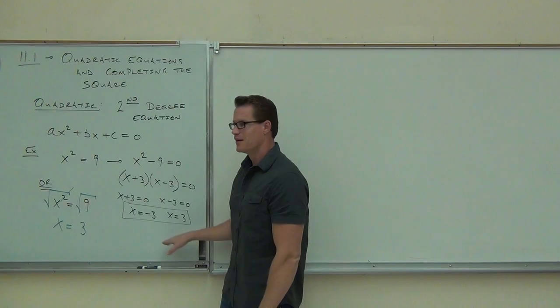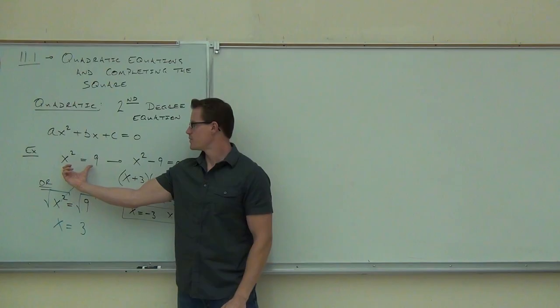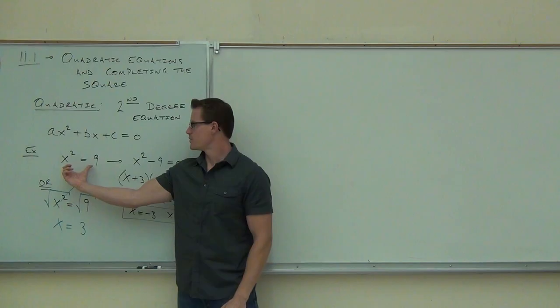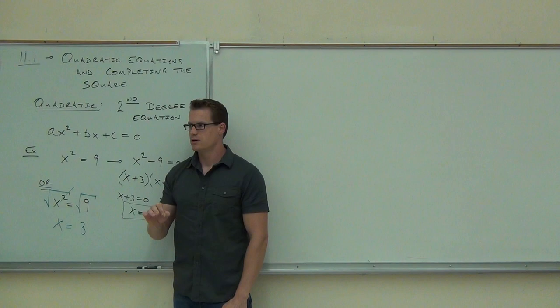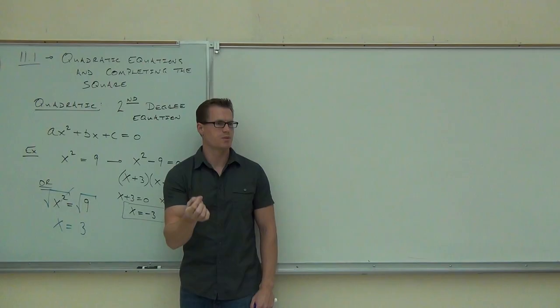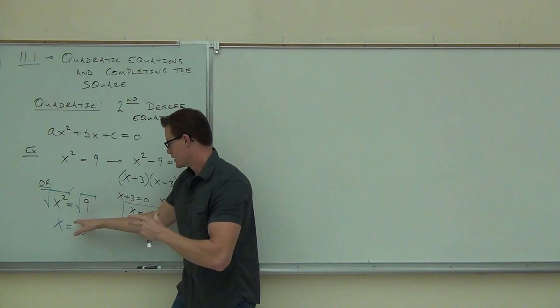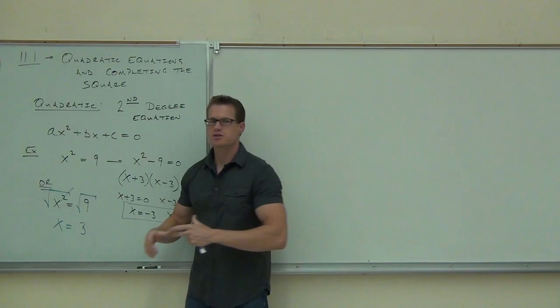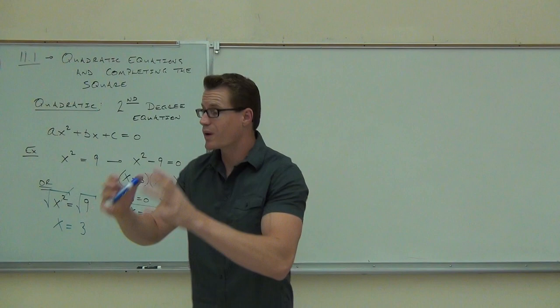In our original example x squared equals 9, you know 3 is going to work because 3 squared is 9. You also know negative 3 works because when you square it, that negative is eliminated — negative 3 times negative 3 becomes positive. So when you're doing a square root of both sides, if you don't factor, you're actually eliminating one of those negative solutions.